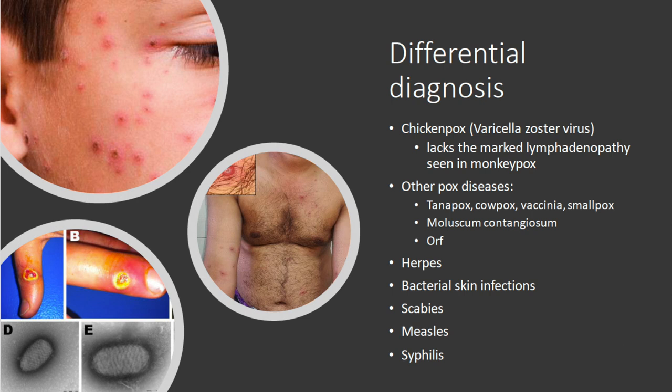Other pox diseases — whether orthopox diseases — we must always be on the lookout for deliberate release of smallpox virus, but also naturally occurring ones can look similar. Molluscum contagiosum — which you can see on that man's chest there — can look quite similar, and we've probably missed cases of orthopox previously thinking it was molluscum.